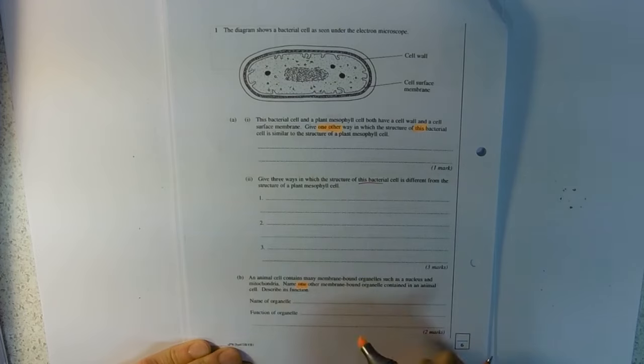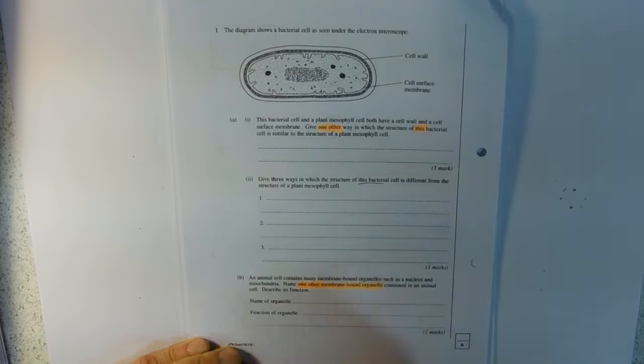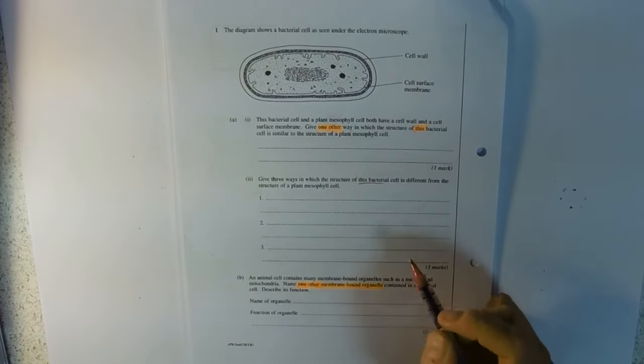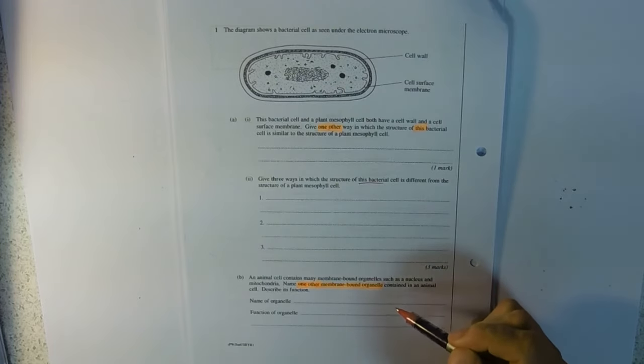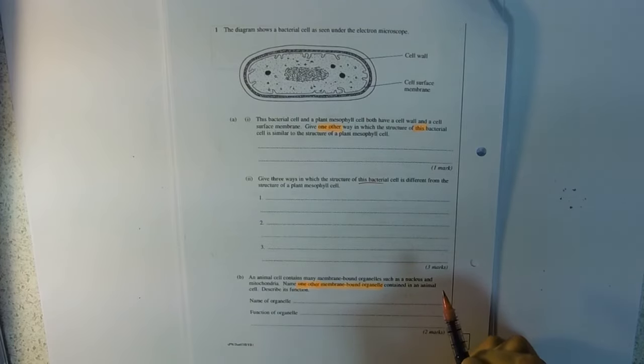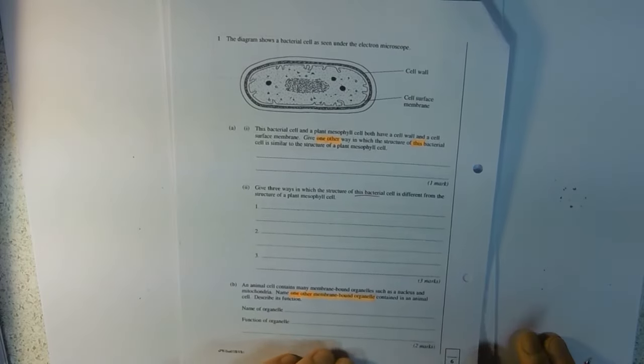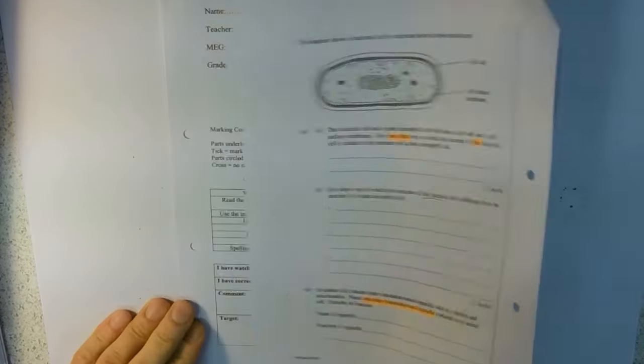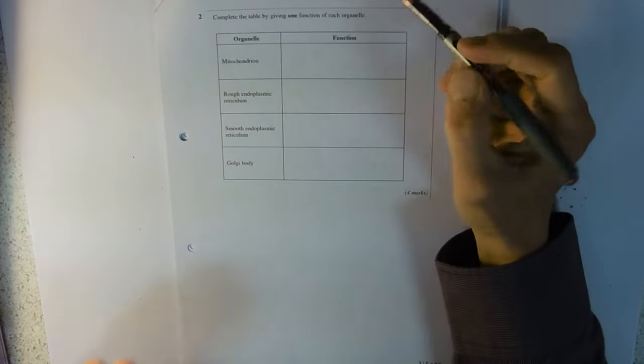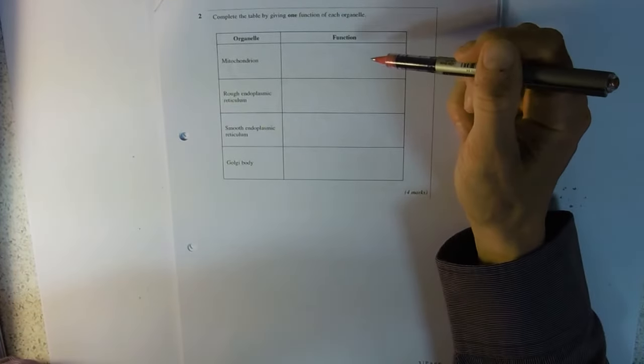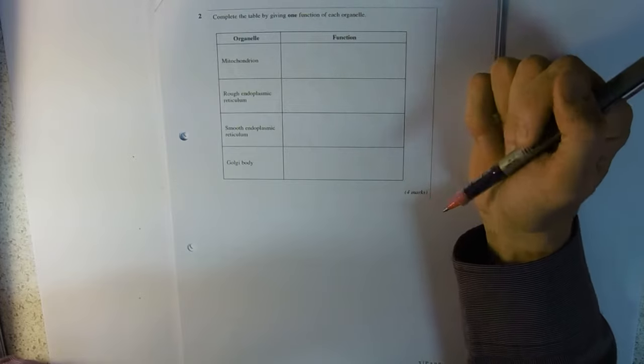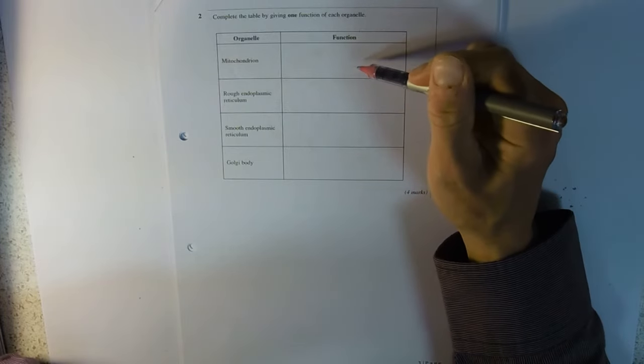Part B: name one other membrane bound organelle. So things, you know, organelles, but a ribosome won't be an organelle - it's not membrane bound. You can't use that. We're looking for the major things.